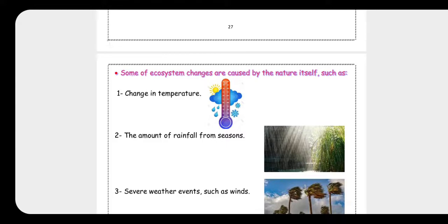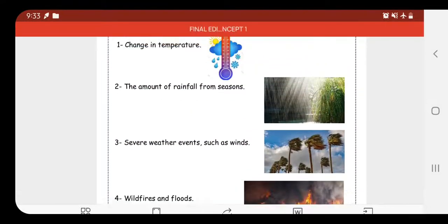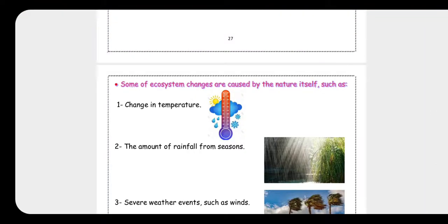Now we will talk about a new part. Ecosystem changes are caused by two things: by nature or by human activity. Some ecosystem changes are caused by nature, like a change in temperature or the amount of rainfall from season to season.